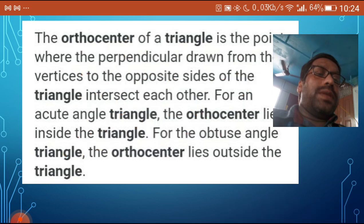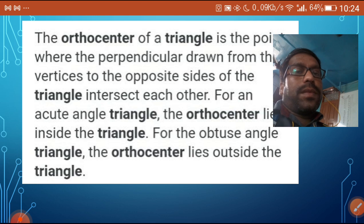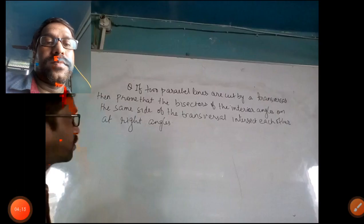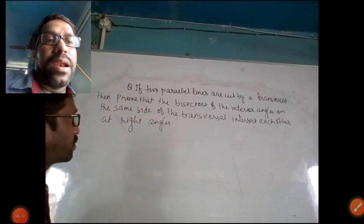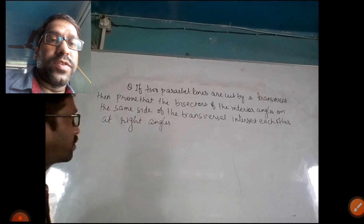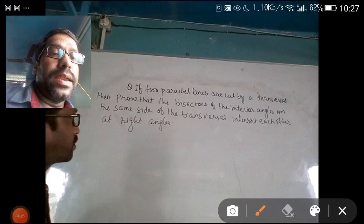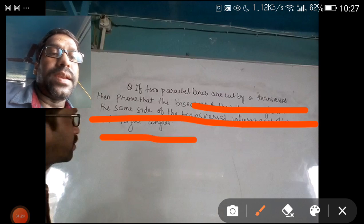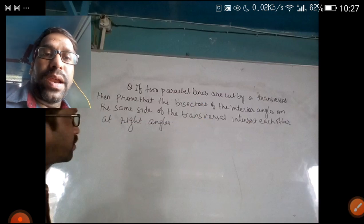I have made one video on this and I would like to share it with you. Here is this question: if two parallel lines are cut by a transversal, then prove that the bisectors of the interior angles on the same side of the transversal intersect each other at right angles. Read that question nicely. Now we are going to solve this.